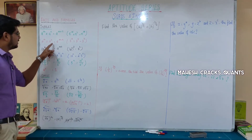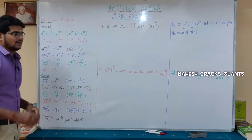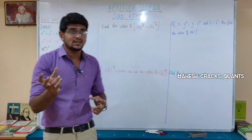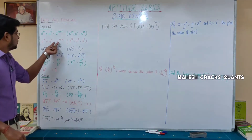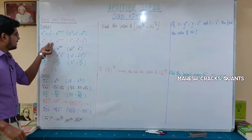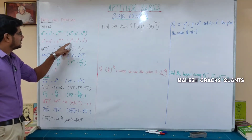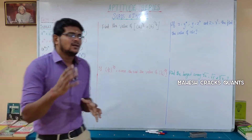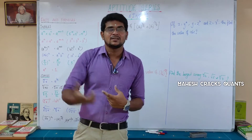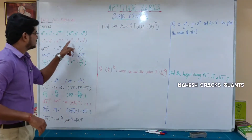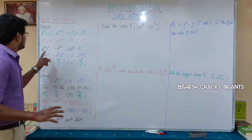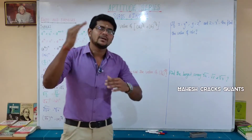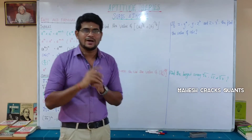A power m divided by a power n is a power m minus n. So if we have a power in a denominator, we will have a minus power. If we have a power n in a denominator, the numerator becomes minus n. For example, 3 power 13 divided by 3 power 5 is 3 power 8. If we cancel 5 times of 3, we will have 8 times of 3.